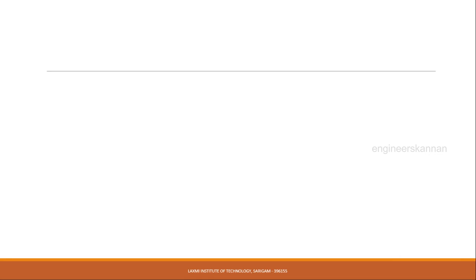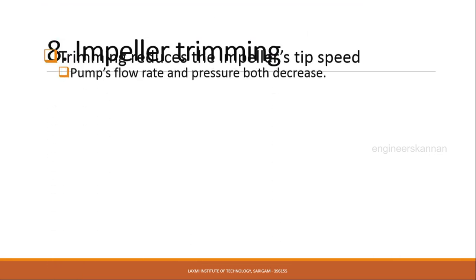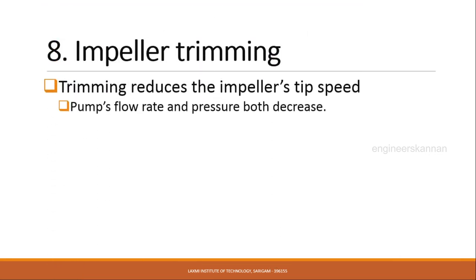The next parameter is impeller trimming. Trimming reduces the impeller tip speed, which in turn reduces the amount of energy imparted to the pumping fluid. As a result, the pump's flow rate and pressure both decrease.